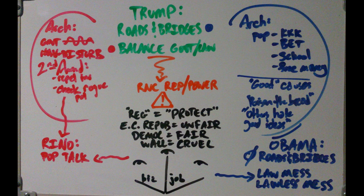Why didn't Obama build roads and bridges? By Obama not doing what Democrats typically do — roads and bridges — that gave Trump a lot of Democrat votes. I haven't seen people talk much about that. That's a subtle academic observation. Obama should have done more with roads and bridges. I don't accept the excuse that people opposed him because he was Black. I think Obama was too young — he was in his 40s. If Obama had done a better job, Trump would not have been able to campaign partially on roads and bridges.